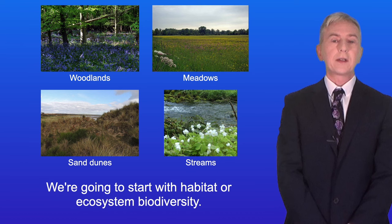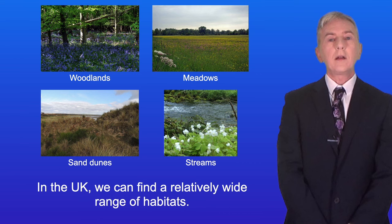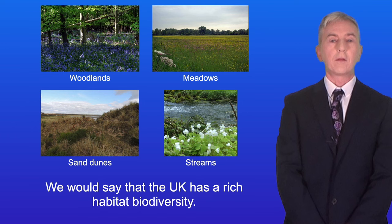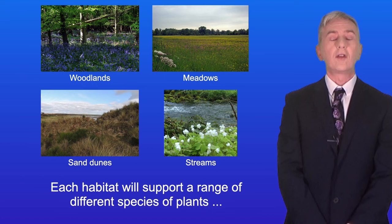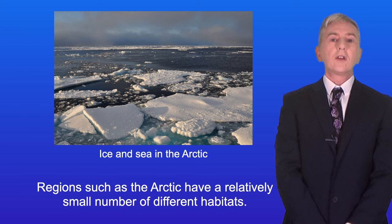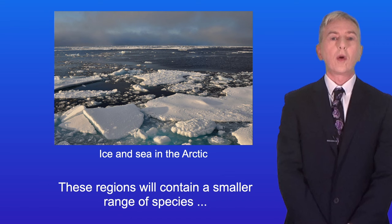We're going to start with habitat or ecosystem biodiversity. Habitat biodiversity refers to all of the different habitats that we find in an area. In the UK we can find a relatively wide range of habitats, including woodlands, meadows, sand dunes and streams, so we would say that the UK has a rich habitat biodiversity. Each habitat will support a range of different species of plants, animals, fungi and microorganisms, so an area with a rich habitat biodiversity will also have a wide range of species. Regions such as the Arctic have a relatively small number of different habitats — we would say these regions have a low habitat biodiversity, and they will contain a smaller range of species.